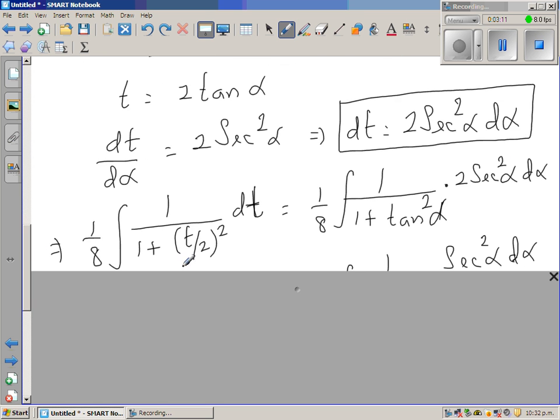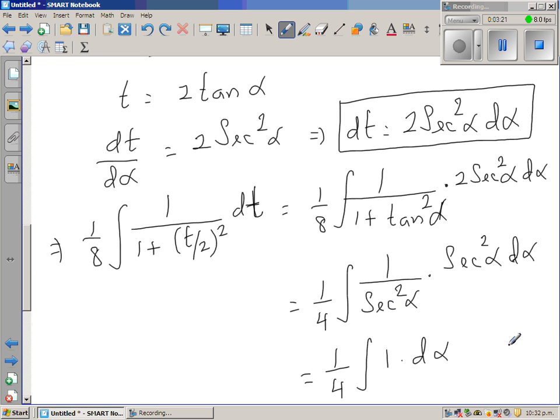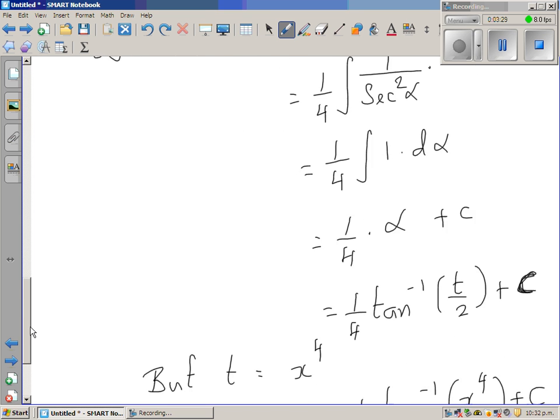This 2 factored out, 2 times 1/8 is 1/4. And 1 plus tan squared is sec squared, so the sec squared terms cancel. This becomes 1/4 integral of d alpha, and the integration is alpha plus C.